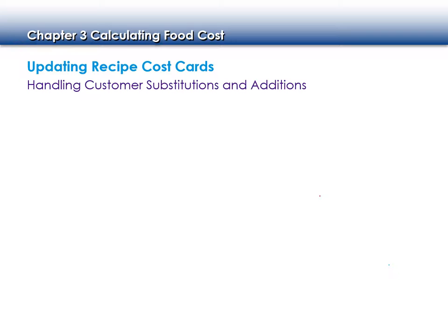If restaurants track how much extra sauce they're handing out — even without charging for it — it can help them reevaluate pricing. If you served 35 salads today and 30 wanted extra sauce, you might need to update the price. Tracking extra portions is also useful for inventory purposes.